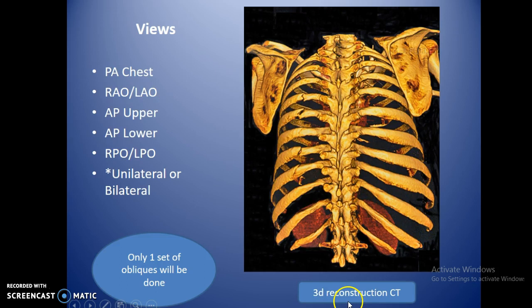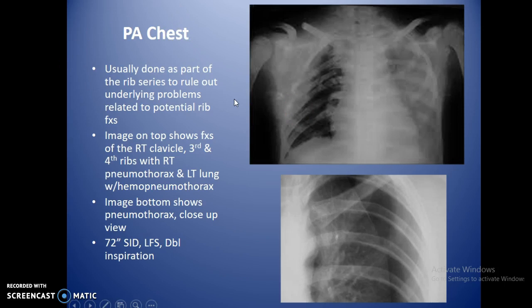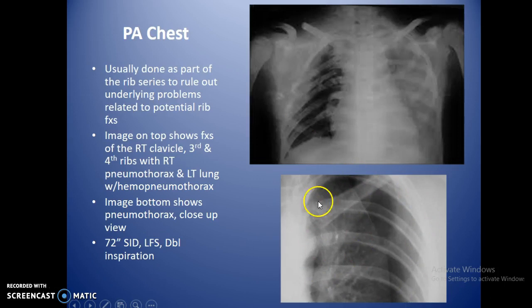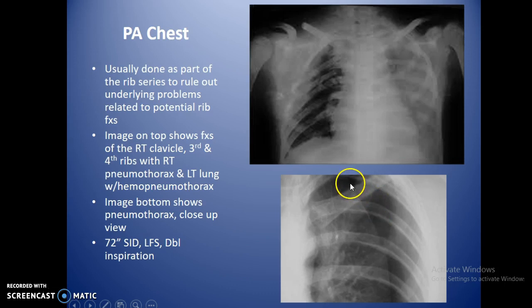This 3D CT reconstruction shows rib fractures with displaced, jagged edges. The PA chest is usually done to rule out underlying problems related to potential rib fractures — typically pneumothorax or hemopneumothorax. A fractured rib's sharp edge can puncture the lung, causing it to deflate. You'll see a line on the image with absence of lung markings toward the outside, confirming a pneumothorax.